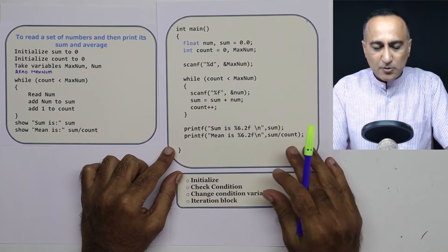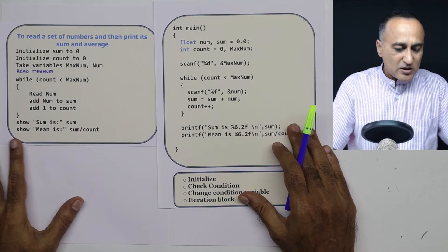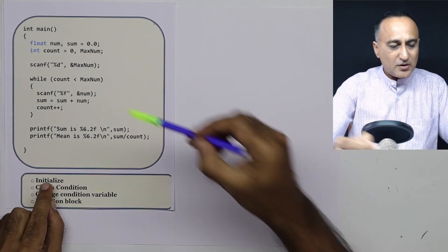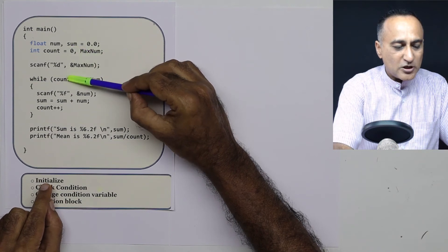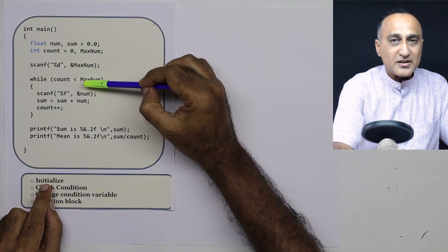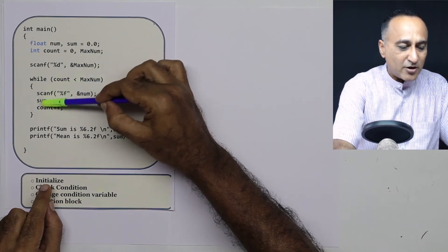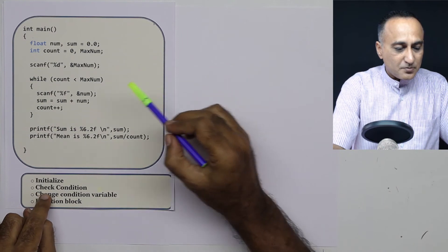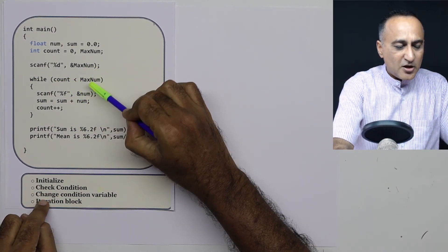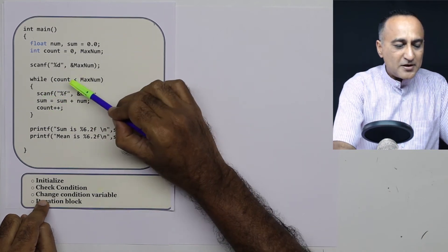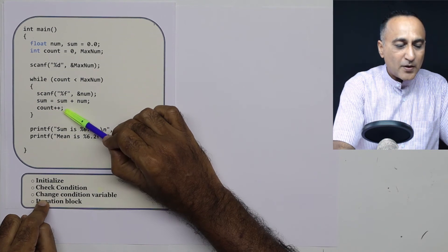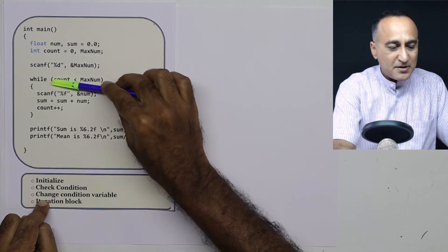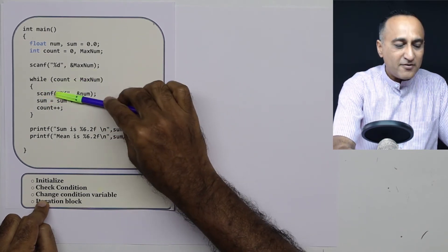A few things you need to understand about the while loop. First, you need to make sure you initialize count to zero. If you forget, the condition is unpredictable — it could be some random number greater than maximum, so it will never enter the loop, or if it's negative, it may loop infinitely or an extra number of times. Always check the condition. Also, the body of the loop depends on count being changed. If you forget to increase count by one, you'll get an infinite loop — the body will never stop executing and will keep adding forever.